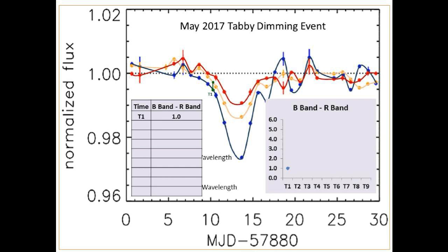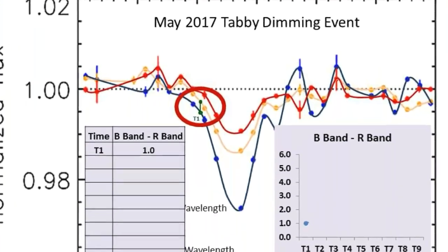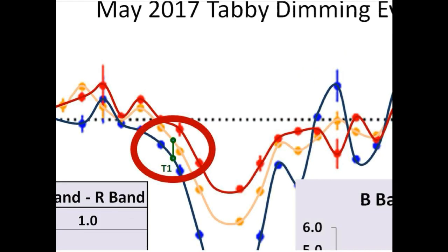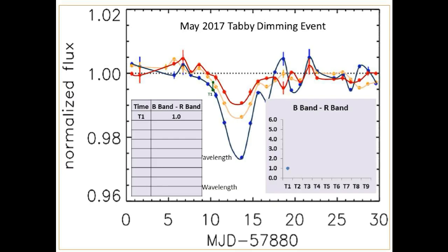Continuing on — if we take the absolute value of the difference between the B-band and the R-band, this can be graphically represented by a segment with a length equal to the distance between the B-band and R-band curves at any point in time. We have this green segment which represents that, and let's arbitrarily give it a value or length of one unit here. As the material continues to accumulate and concentrate along our line of sight between us and the star, the next segment at a later point in time will be slightly longer if the material differentially absorbs or scatters light based on its wavelength.